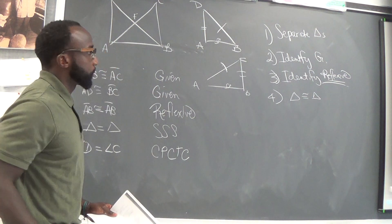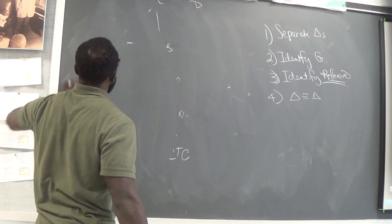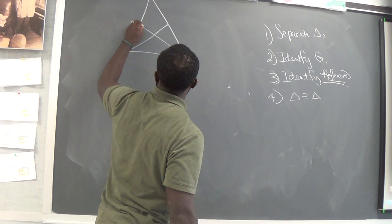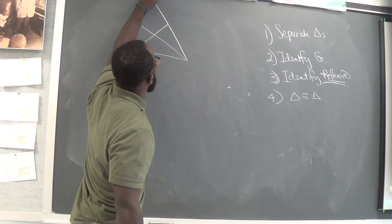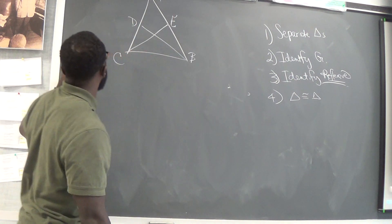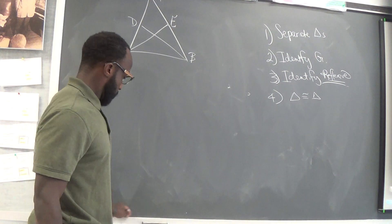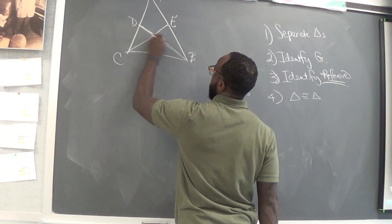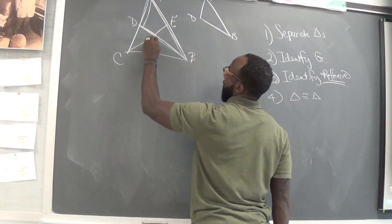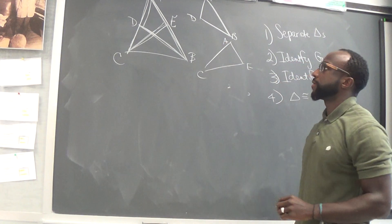Let's look at another example. Alright, so we got this situation here. Help me label this triangle: C, A, D, B. The first thing we need to do is separate the triangles. So we got this triangle here — that's going to be DBA. And then we have this triangle here — that's CEA. We've separated.